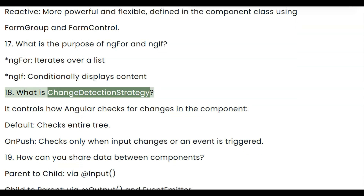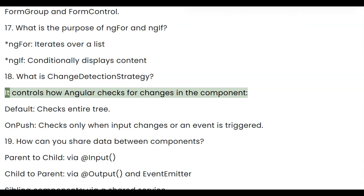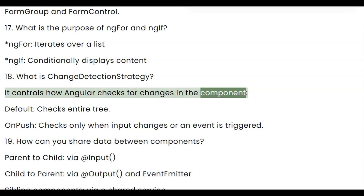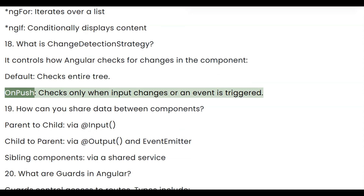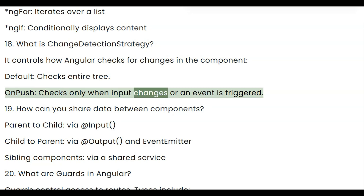Question 18: What is change detection strategy? It controls how Angular checks for changes in the component. Default checks the entire component tree. OnPush checks only when input changes or an event is triggered.